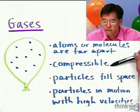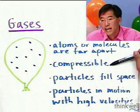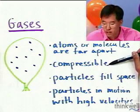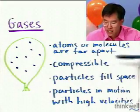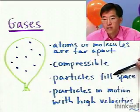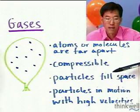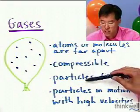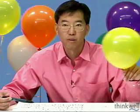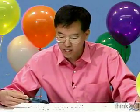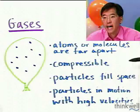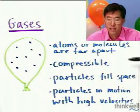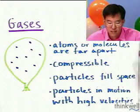Because they're very far apart, it turns out that gases are very compressible — that is, you squeeze on them and you can decrease their volume quite a bit. Another property is that the particles fill all of the space. So if you're talking about a sample of gas like this balloon I have here, we have to describe the volume of the balloon as where the gases are. And finally, the particles of gas are in motion and some of them actually have really high velocities, and we'll talk about the distribution of those velocities later on.